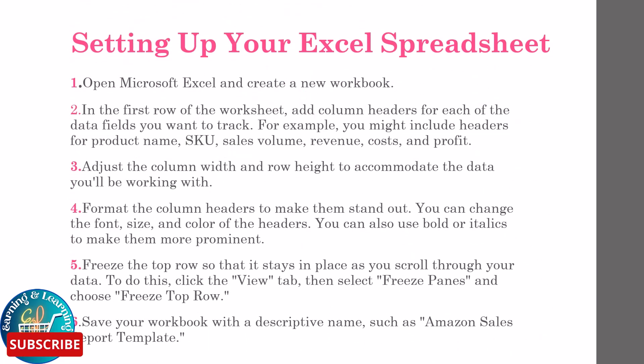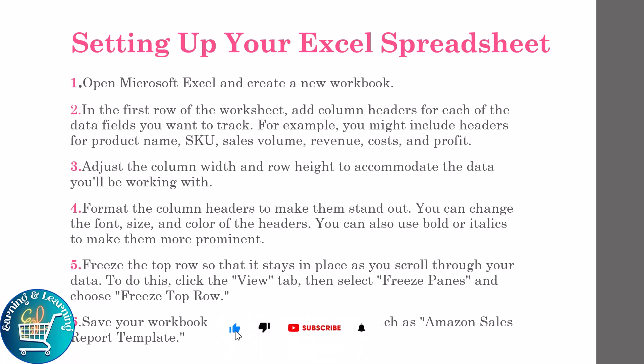In this section of the video, we will cover how to set up your Excel spreadsheets for creating custom reports for Amazon sales. Follow these steps: open Microsoft Excel and create a new workbook. In the first row of the worksheet, add column headers for each of the data fields you want to track — for example, product name, SKU, sales volume, revenue, cost, and profit.